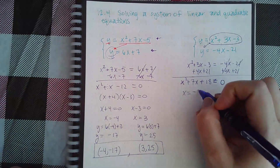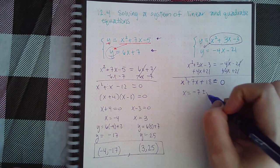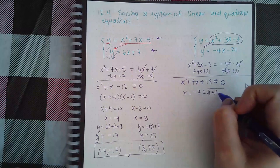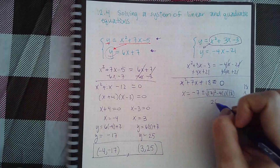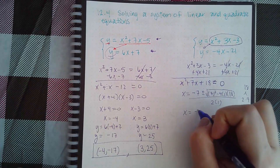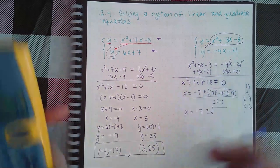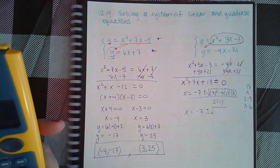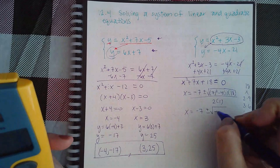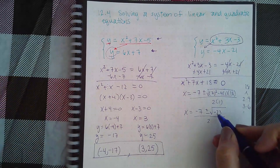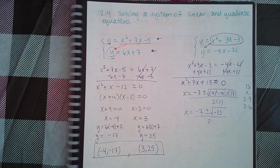So negative b plus or minus b squared minus 4 times 1 times 18. I get a negative 23 over 2. This means it's imaginary, right? When you have a negative inside the square root, it means it's imaginary.